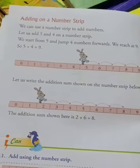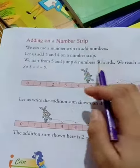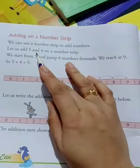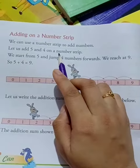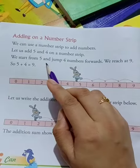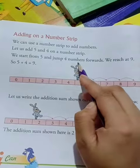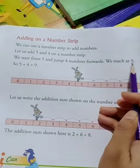We can use a number strip to add numbers. Let us add five and four on a number strip. We start at five and jump four numbers forward to reach nine.